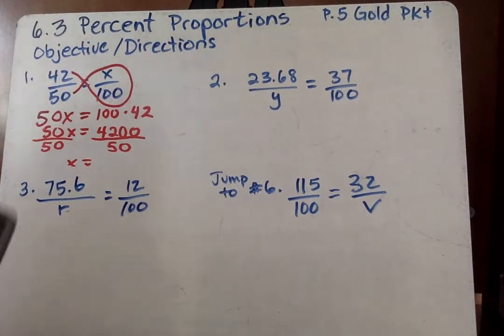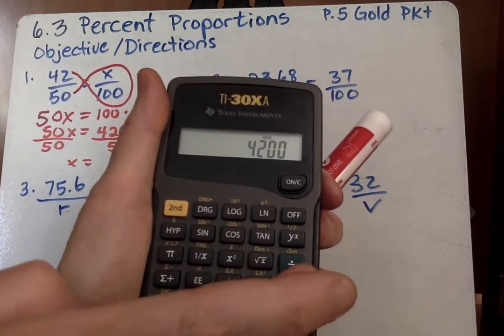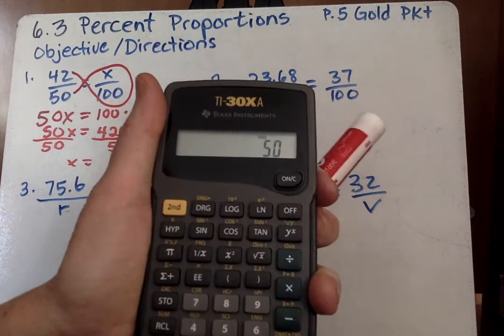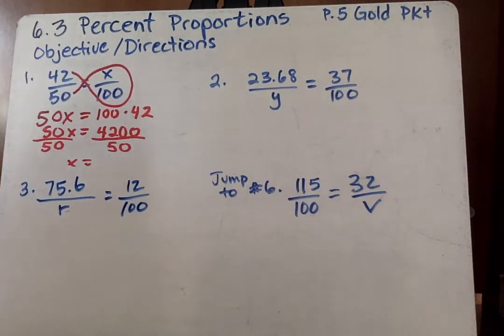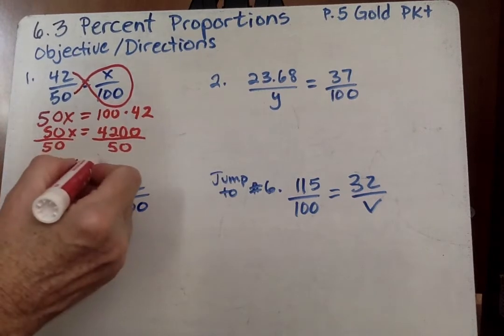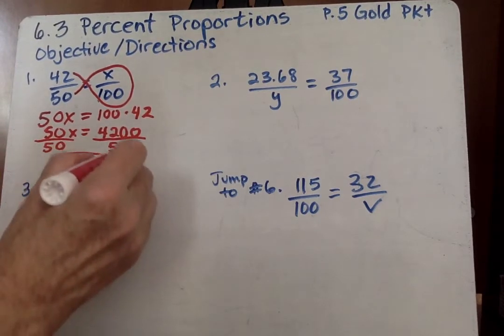Then we divide by 50 because this is multiplication and you do the inverse operation. Then go ahead and get your handy dandy calculator. And we put 4200 in there first divided by 50. 84. So x equals 84.